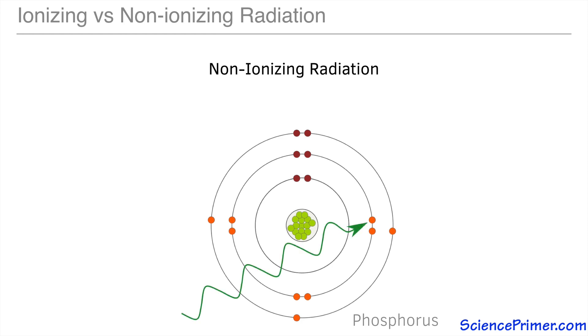When interacting with an atom, non-ionizing radiation is either absorbed by the entire atom, increasing its internal kinetic energy, or it's absorbed by a single electron. When it is absorbed by an electron, it does not completely remove the electron. Instead, the absorption of that energy kicks the electron up from its stable orbital to a less stable, more energetic orbital.